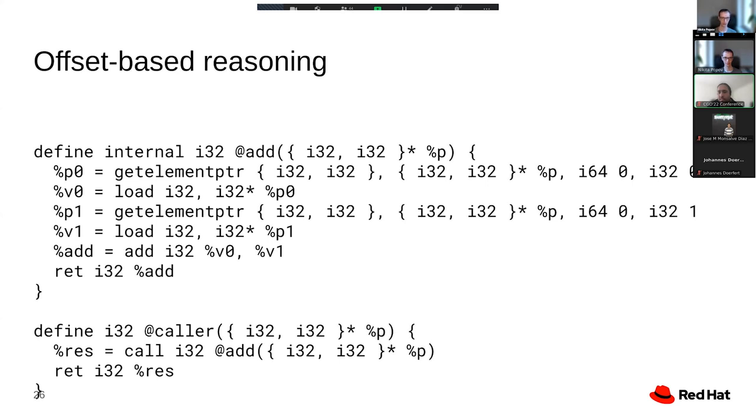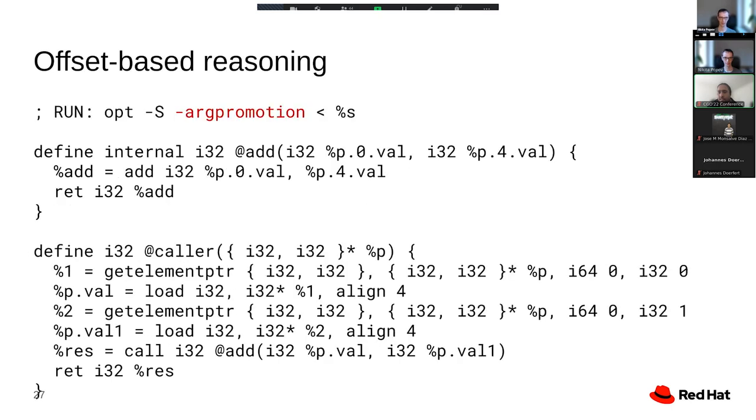We have the add function here at the top, which loads two struct elements, adds them together, and returns the result. What argument promotion does is to move those loads outside the add function into the caller, and then pass in scalar values into the add function. This is a bit silly in this example, because the optimization just moves loads from one function to another one. The actual idea is that in the caller, those loads might be based on an alloca, and then mem2reg or sroa can eliminate those.